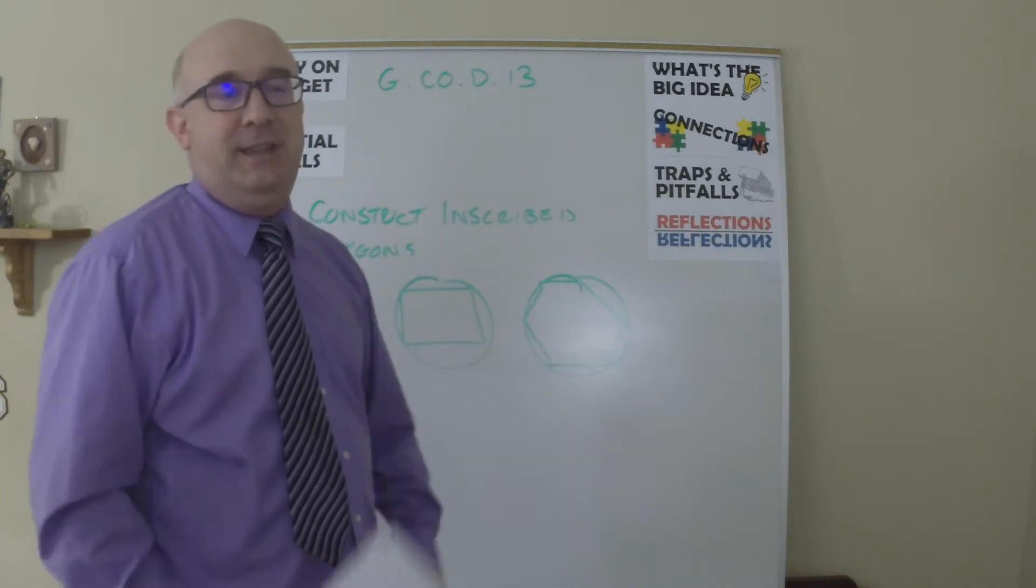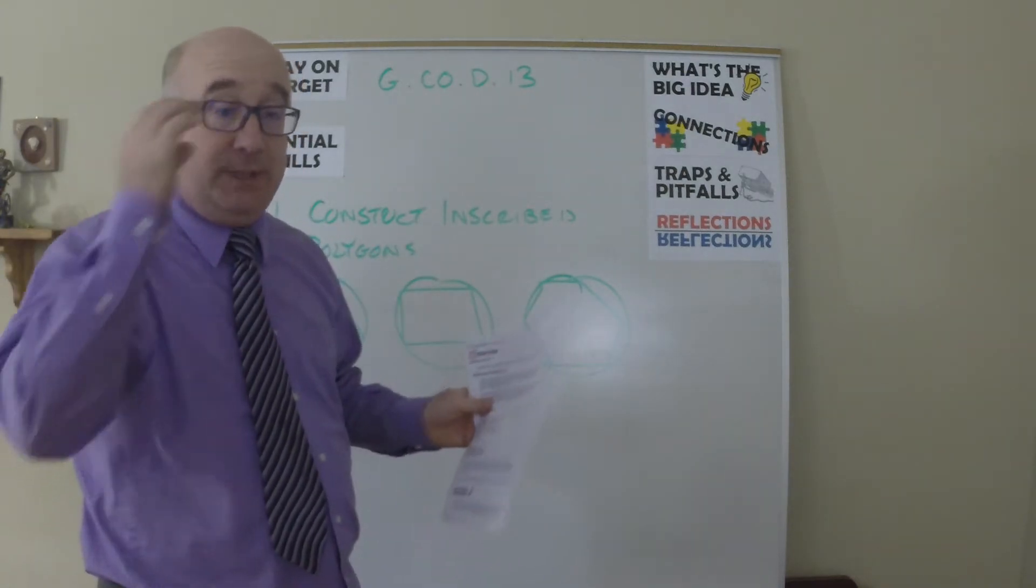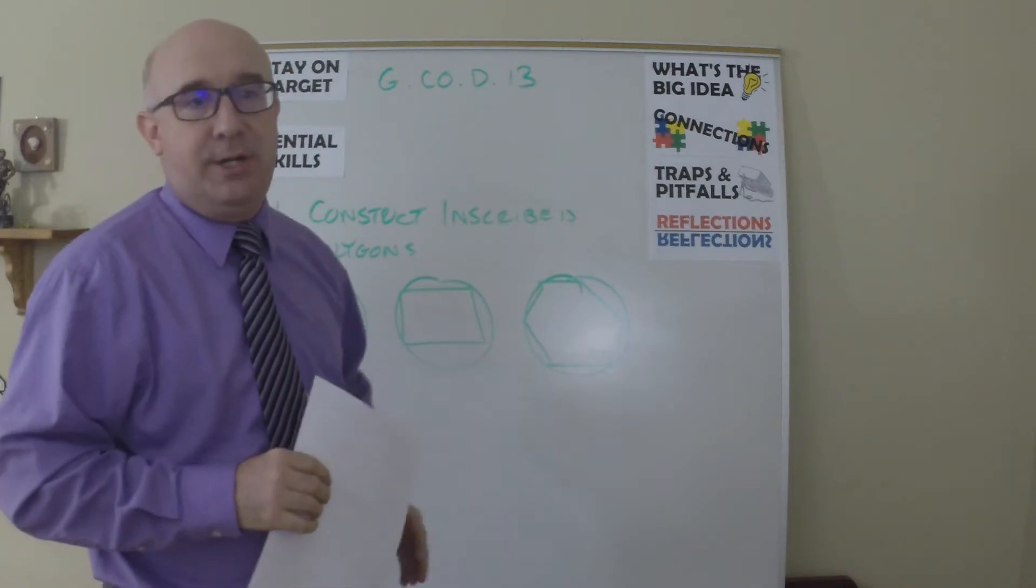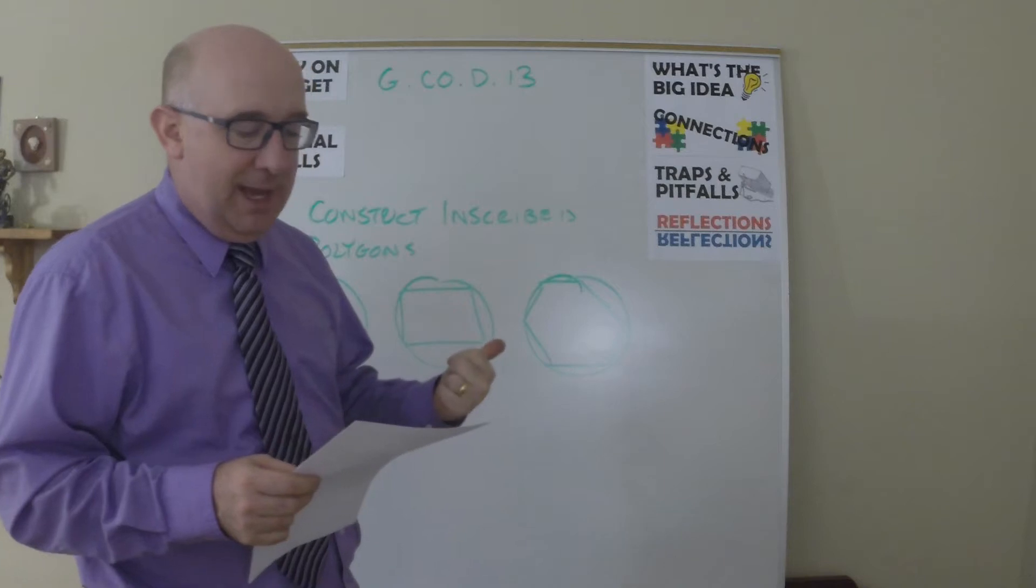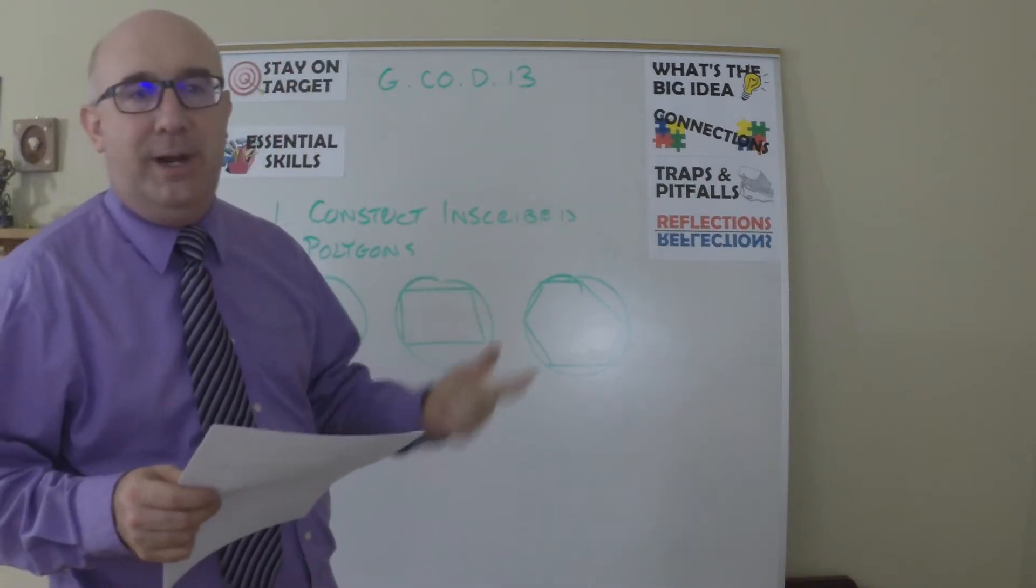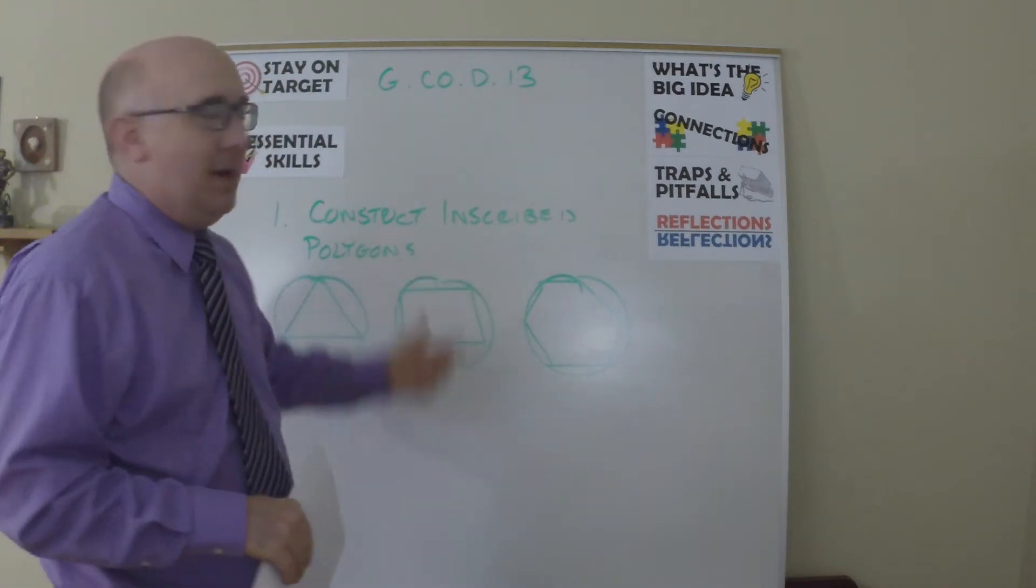Lucky number 13, the final objective of unit one of all about congruence, is also a construction objective. It basically says construct an equilateral triangle, a square, and a regular hexagon inscribed in a circle. So this is about inscribing these shapes in a circle.